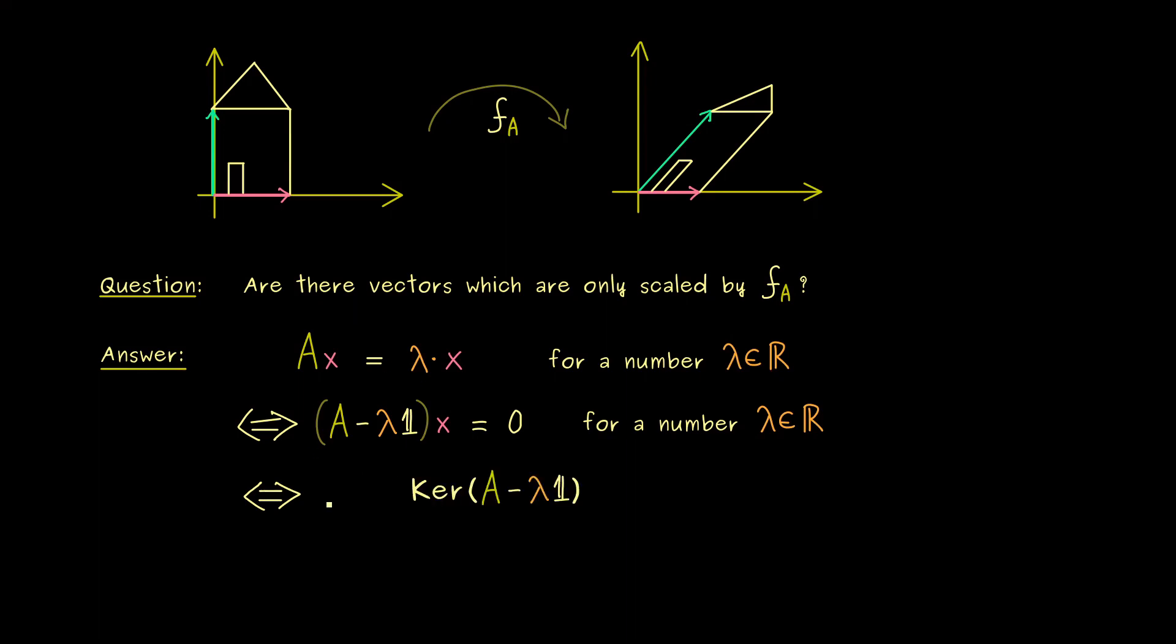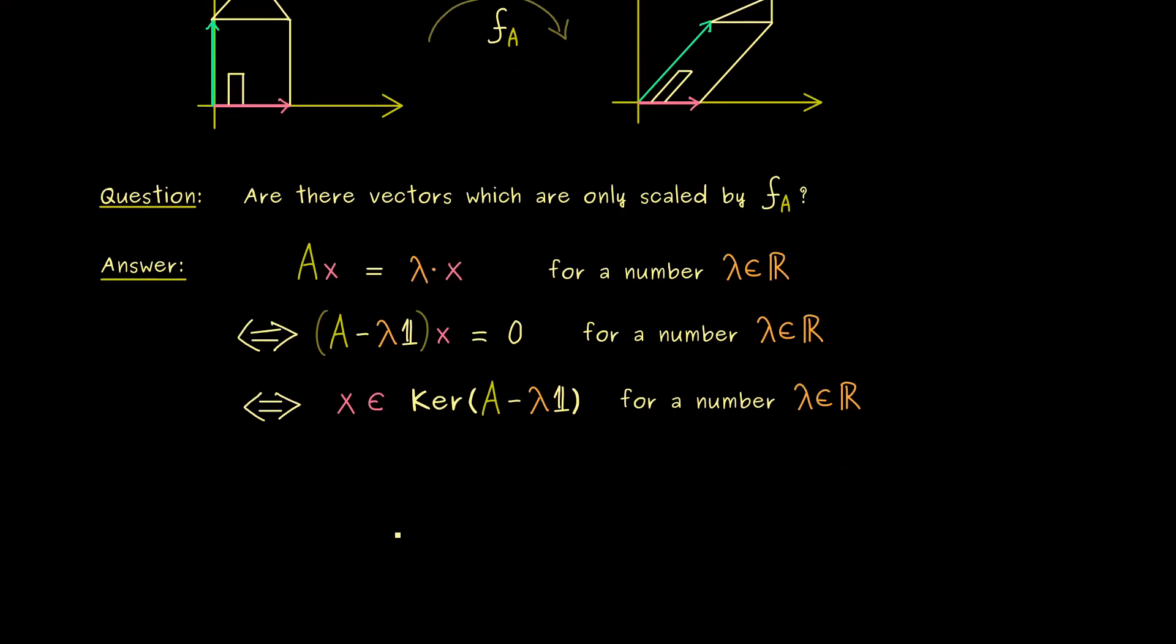So please recall, the kernel of a matrix just represents all the vectors that are sent to zero by the matrix. In other words, our original equation just means that x lies in the kernel of this new matrix. Ok, so now this is something you really should remember, because we will use it a lot for calculations later.